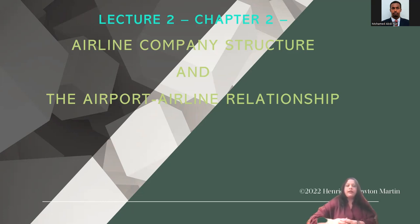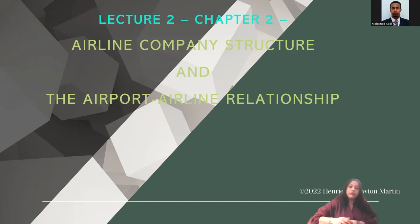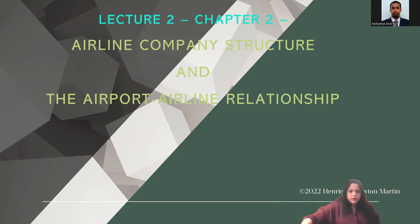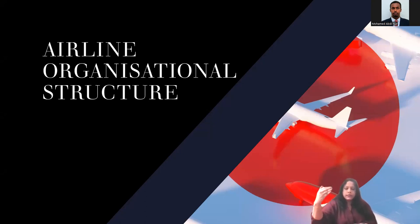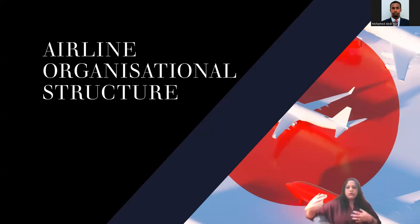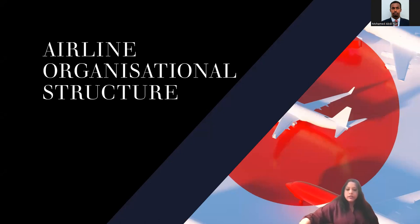Today we're going to talk about airline organization structure. The airport organization structure has the airport director, the assistant airport director, then the operations and management team, and others such as the security team. The airline organization structure has a top-level management, medium level, and other staff. Let us see what they are exactly.